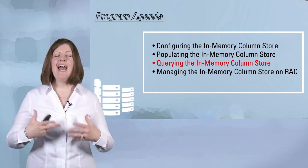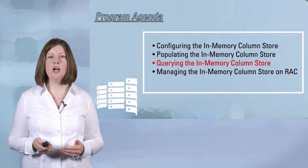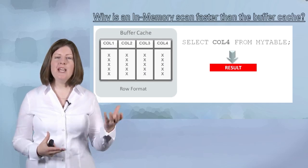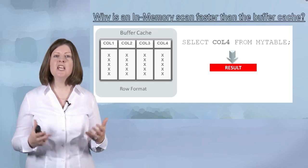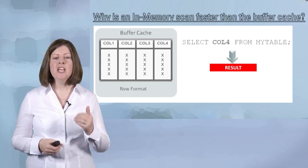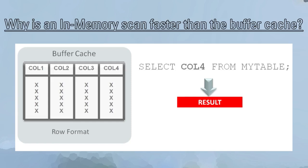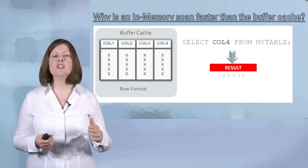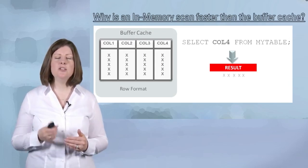I want to talk about how you know if your queries are benefiting from the in-memory column store. Let me refresh your memories on why scanning data in the column store is so much more efficient than scanning the same data in buffer cache — after all, both sets of data are in-memory. Take for example a query looking for column 4 in a table populated in the row format in buffer cache. We find the offset for the first row, walk down that row until we find the fourth column, extract the value, and move to the next row, until we've scanned all rows returning values just for column 4.